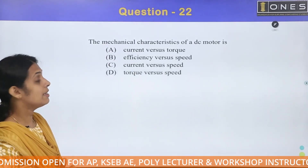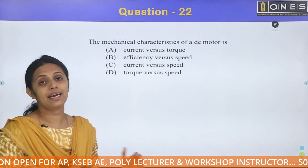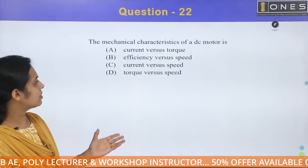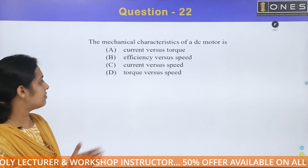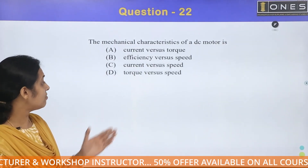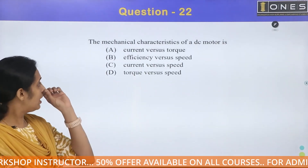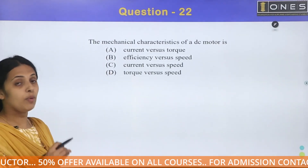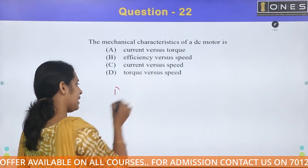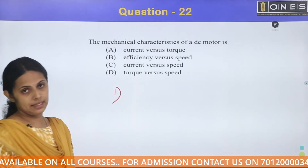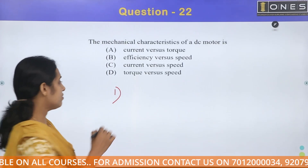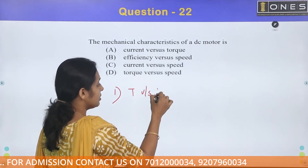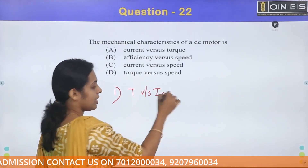Next question: the mechanical characteristics of a DC motor is — current versus torque, efficiency versus speed, current versus speed, or torque versus speed. The main DC motor has three characteristics. The first characteristic is torque vs. armature current.